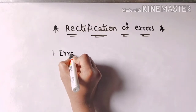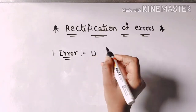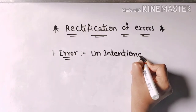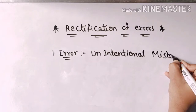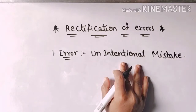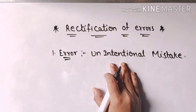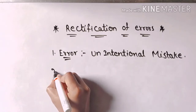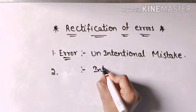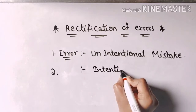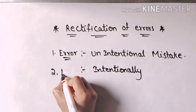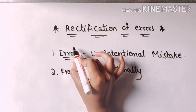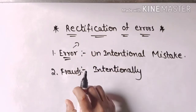Firstly we should know the meaning of error. An error is an unintentional mistake — a mistake done unknowingly. When a mistake is done unknowingly or unintentionally, those errors can be rectified. But if the mistake is done intentionally, those mistakes are known as frauds. When mistakes are done unintentionally, they can be rectified — and how they can be rectified is the subject of this chapter.